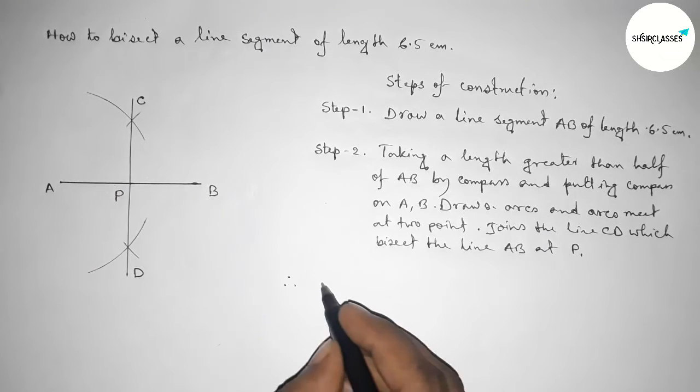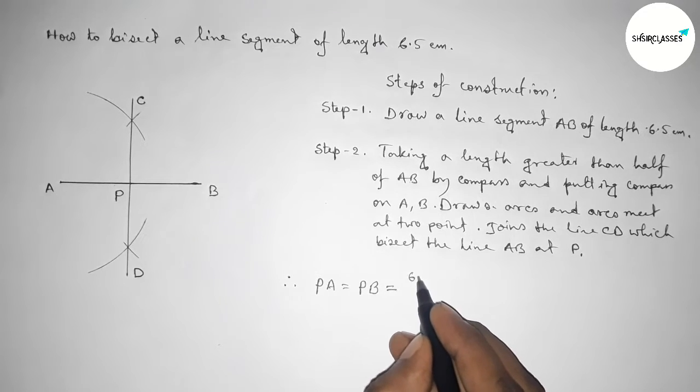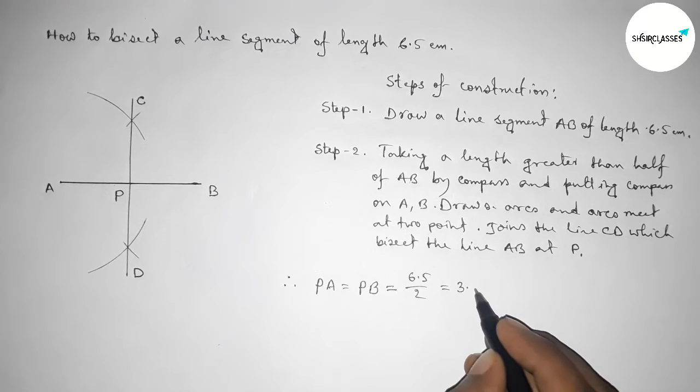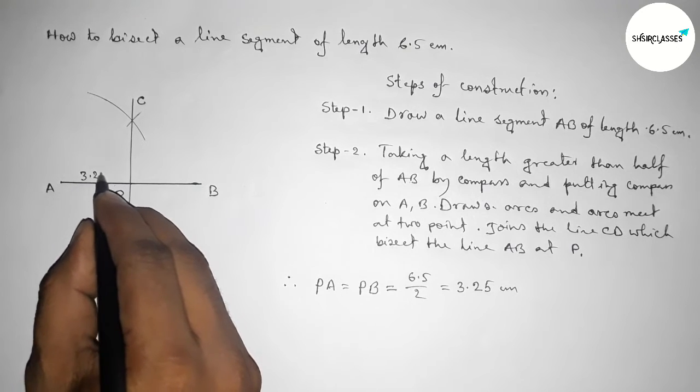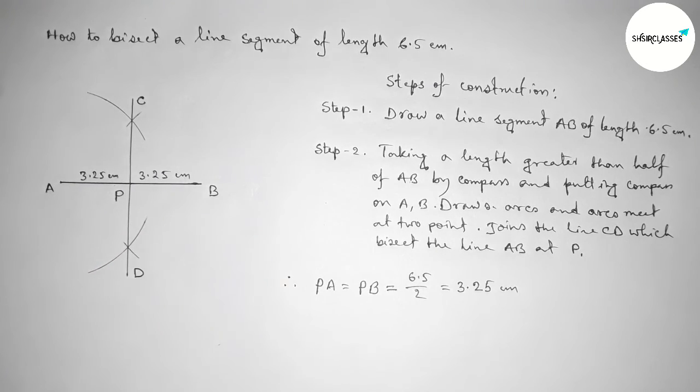Therefore, PA and PB are equal. So PA equals PB equals 6.5 divided by 2, which is 3.25 centimeters. This is 3.25 centimeters and this is 3.25 centimeters. That's all, thanks for watching.